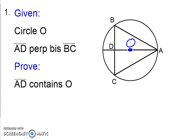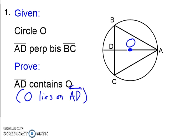Are we going to use this for proofs? Yes, we definitely are. So let's look at this first proof. We are given a circle O. We are told that AD is the perpendicular bisector of BC, and we want to prove that AD contains O — another way of saying this is that O lies on AD. To show that O lies on the perpendicular bisector, we need to show that it is equidistant from the endpoints, in this case B and C.